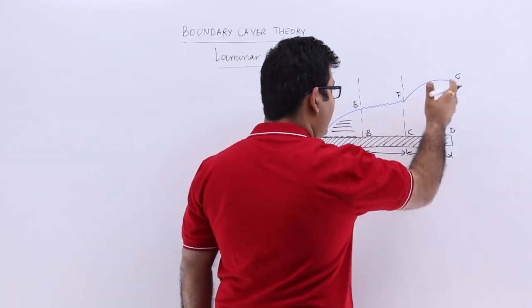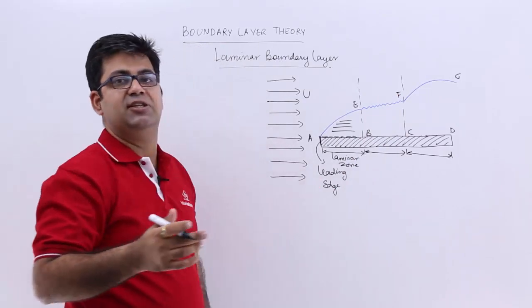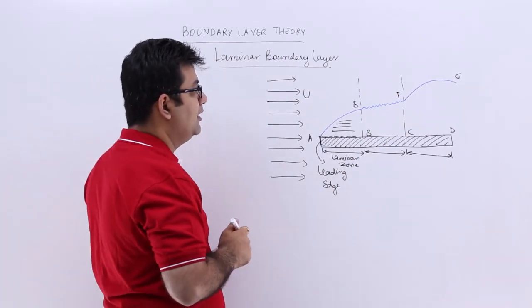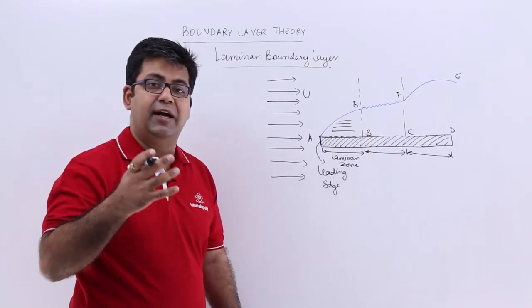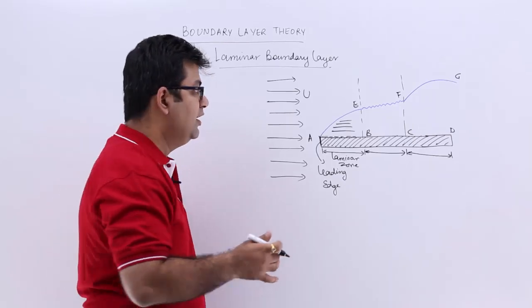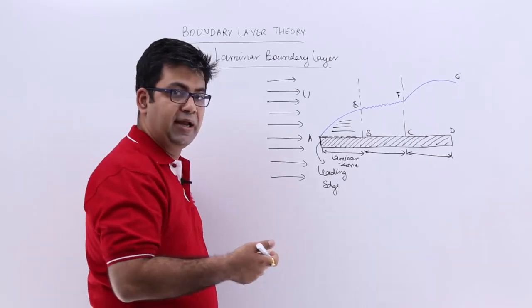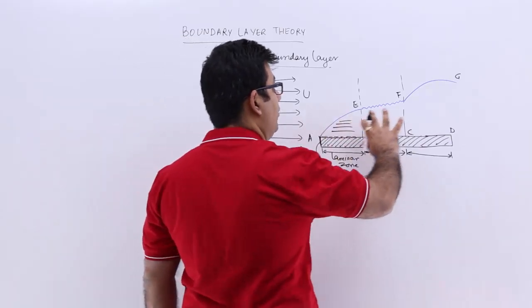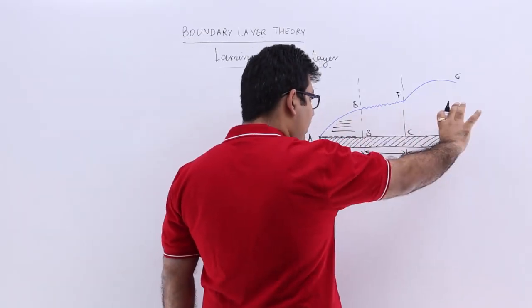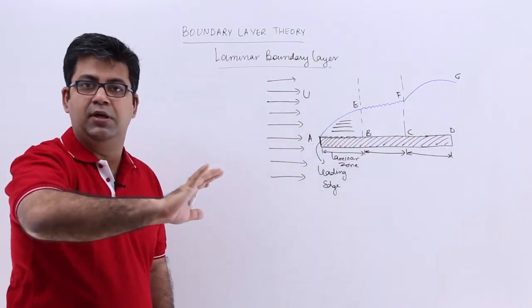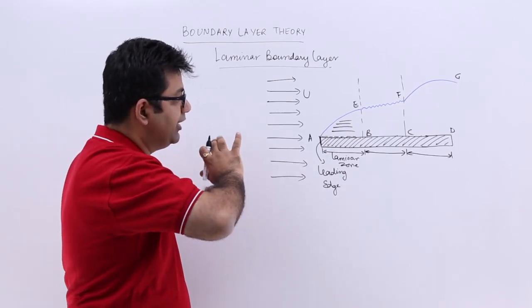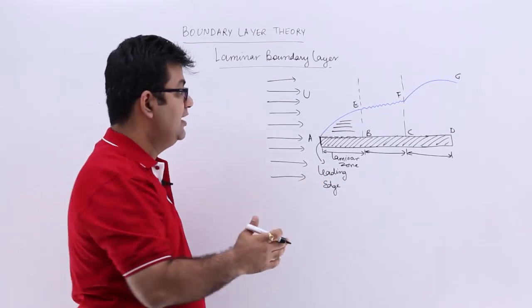This is because the retardation effect of the shear stresses produced in the boundary layer keeps on increasing as we keep going away, so the retardation of the fluid increases as you go away from the leading edge.